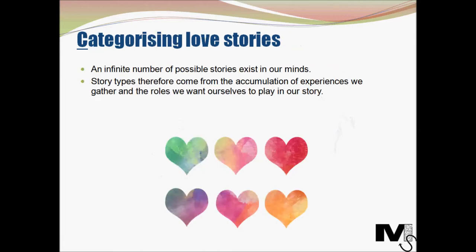How do we categorize these love stories? Sternberg proposed that there could be an infinite number of possible love stories in our minds, and owing to the type of person you're with, you could start living a particular type of story which could actually change with a different person that you meet. Story types therefore come from an accumulation of experiences we gather through our lives and the roles that we want ourselves to be playing in our story. There's an ideal role we want to play, influenced by all of the stories we're subjected to all the time.